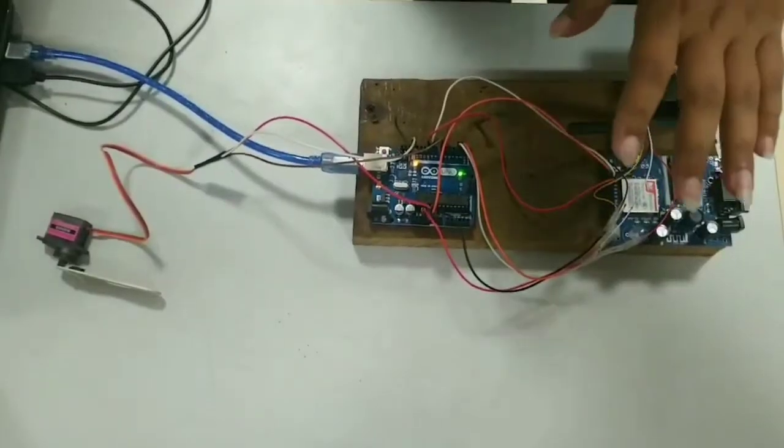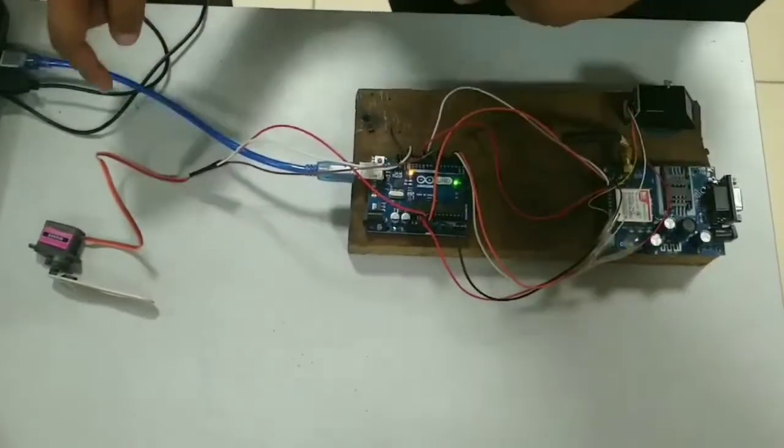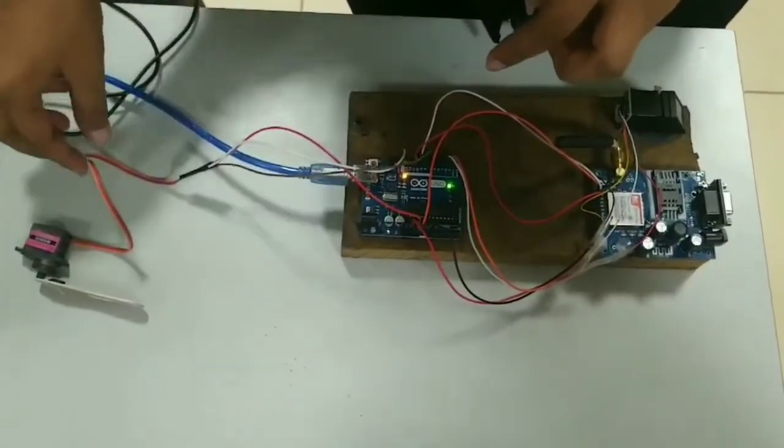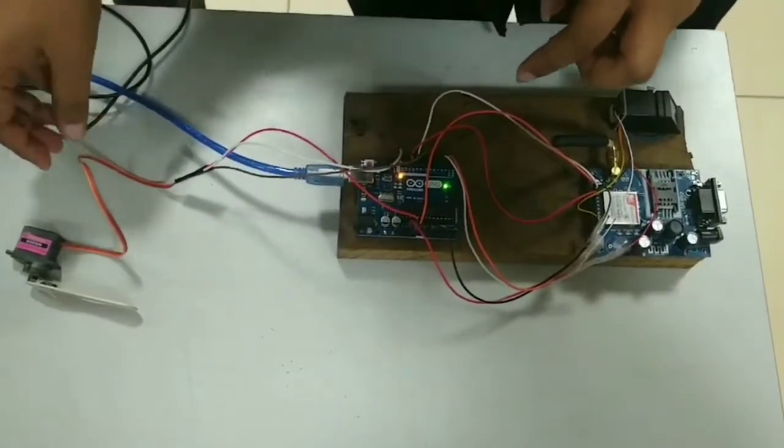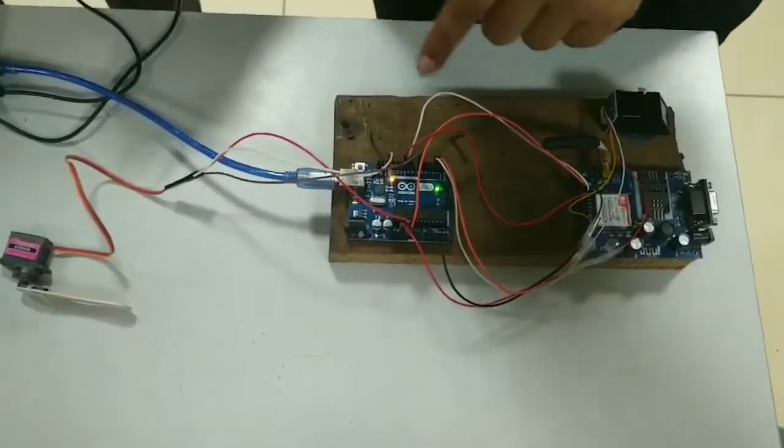The connections are as follows: Arduino is connected to servomotor. The red wire is connected to 5 volts, orange wire to ground, and brown wire to pin 8.